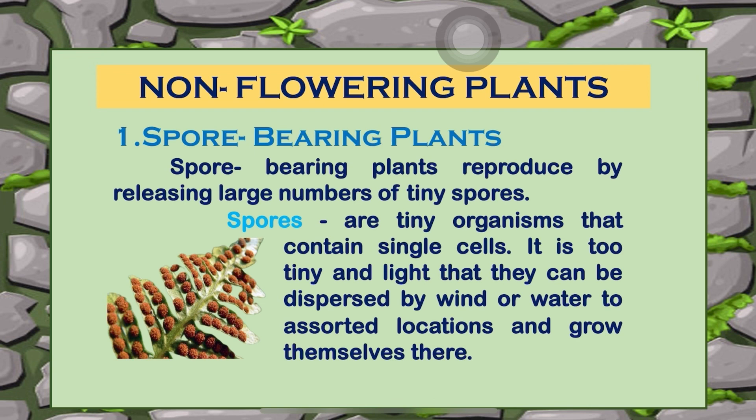Spore-bearing plants reproduce by releasing large numbers of tiny spores. Spores are tiny organisms that contain single cells. They are so tiny and light that they can be dispersed by wind or water to various locations and grow on their own.